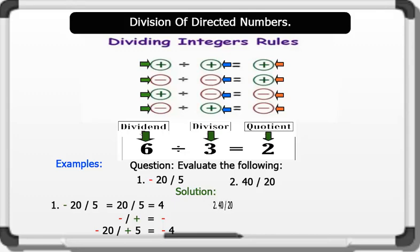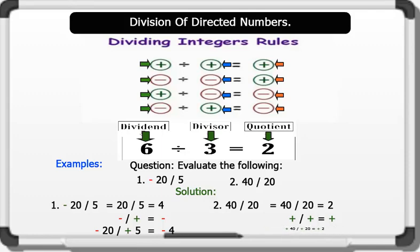2. 40 divided by 20 equals 40 divided by 20, which gives us 2. Dividing the signs: according to the rule, plus divided by plus will give us plus. Therefore, plus 40 divided by plus 20 equals plus 2. That's awesome.